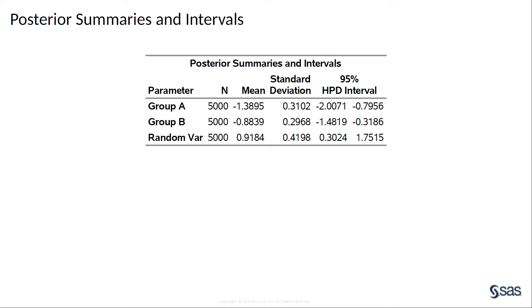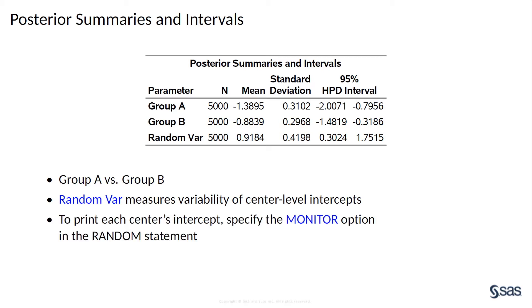The Posterior Summaries and Intervals table lists the posterior means, standard deviations, and 95% HPD intervals for all parameters, starting with the fixed effects group A and group B, and then the variance of the random intercepts, labeled as random var. Posterior summary statistics of center-level intercepts are not displayed by default, but you can request them by using the monitor option in the random statement.